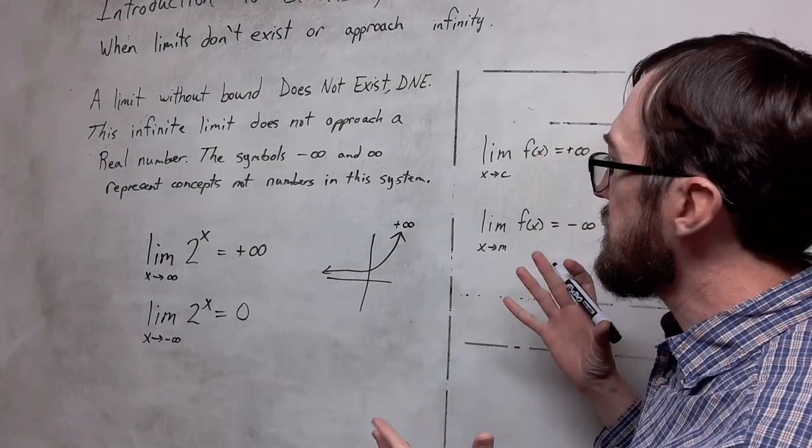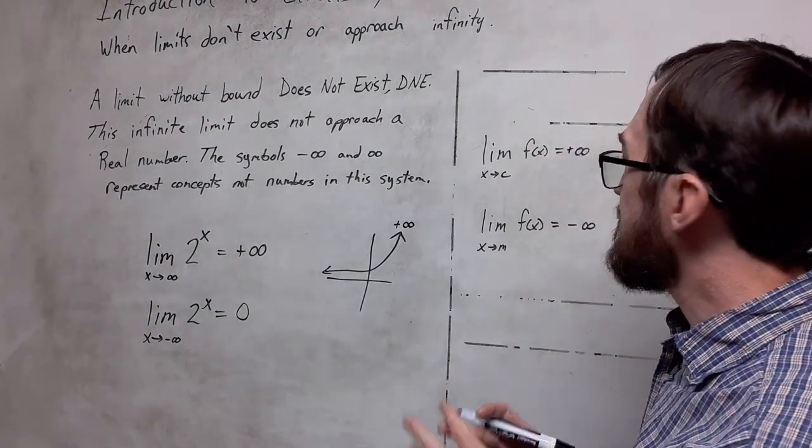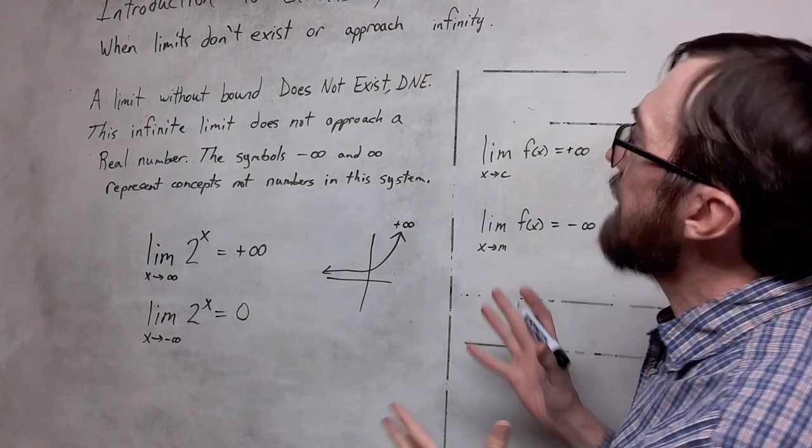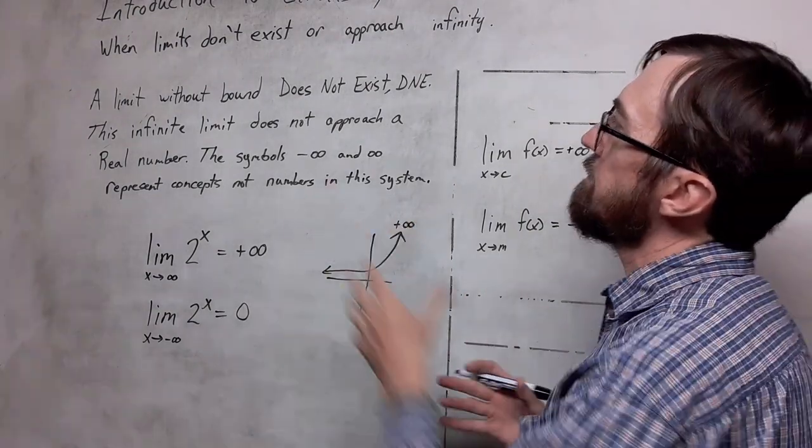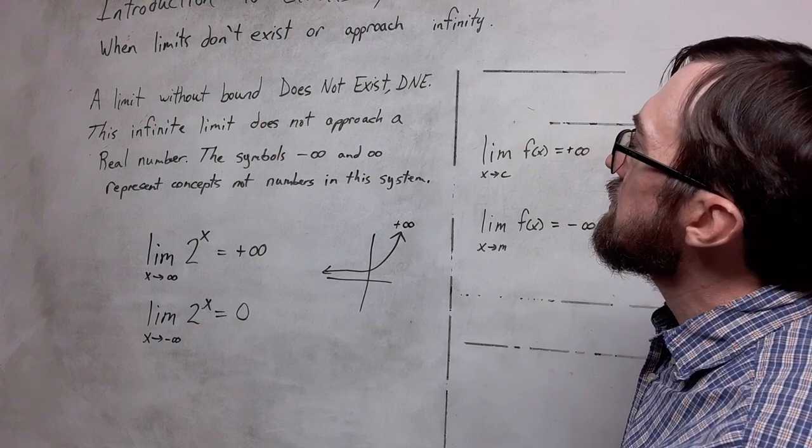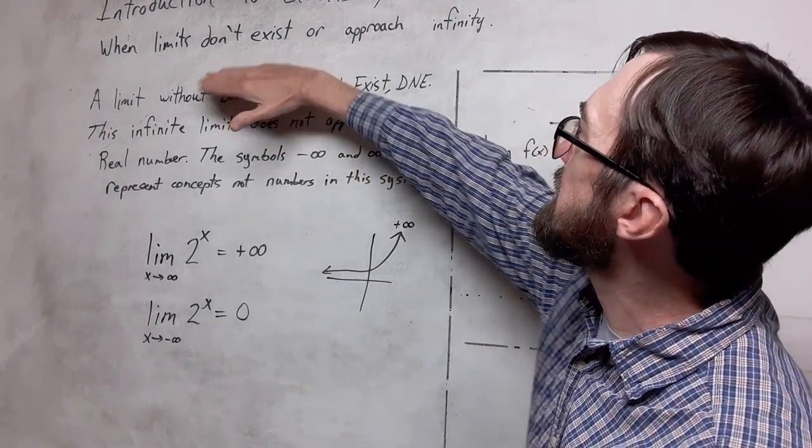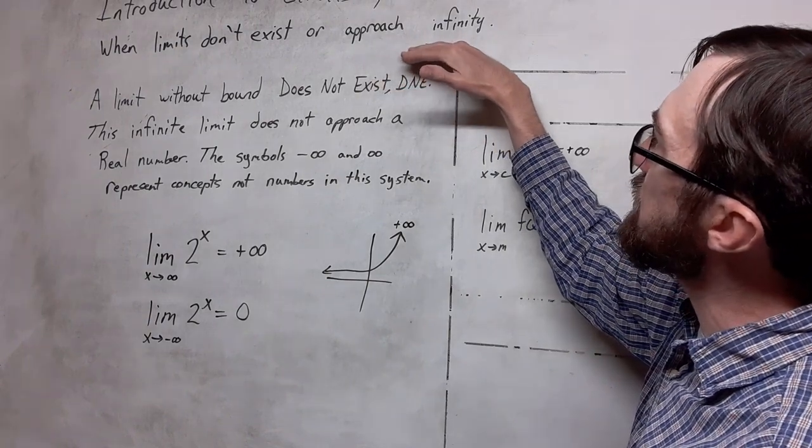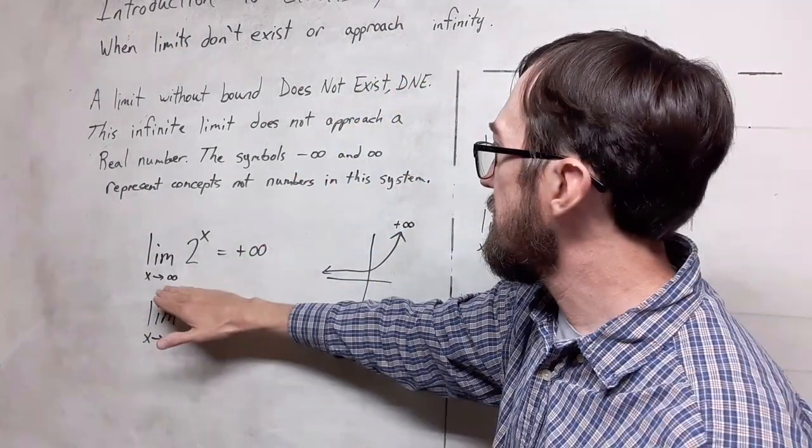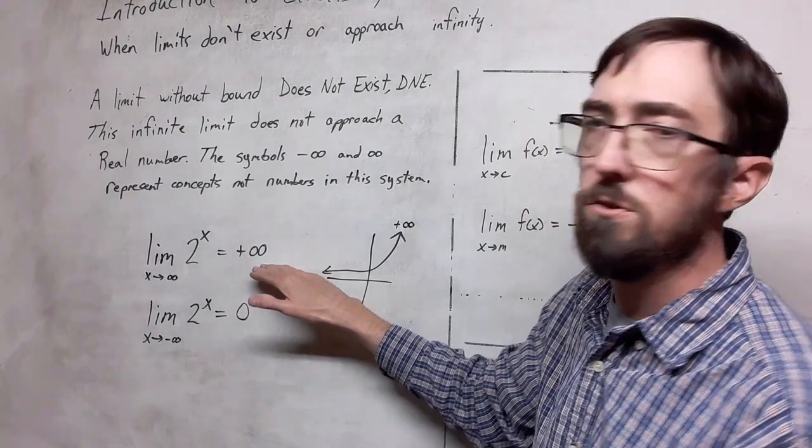A lot of notation here. Some new concepts are being added to our understanding of limits. So we've seen examples of limits that don't exist, and we see approaches to infinity both in the x and the y directions.